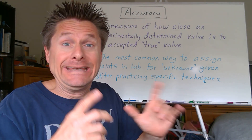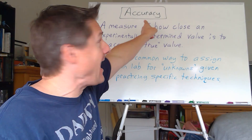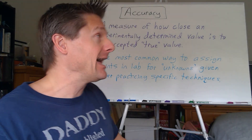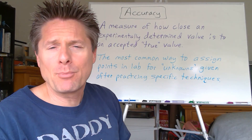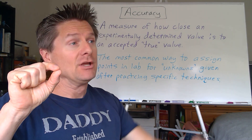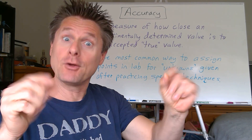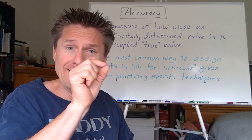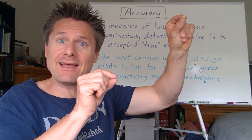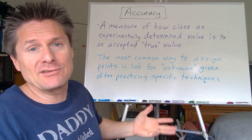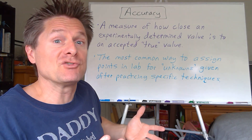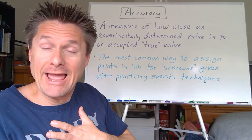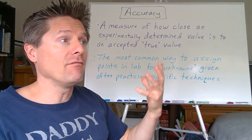No different than shooting archery or throwing knives — I've got a target, did I hit it? That's accuracy. This is how we'll measure the majority of your points. Accuracy is how close your experimental value is to a true accepted value. If I'm aiming for a bullseye and I hit over here, I didn't hit the bullseye — like darts with concentric rings, each worth less and less points.